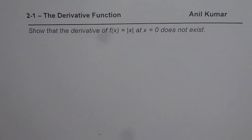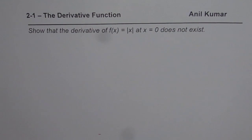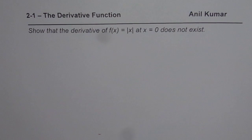I am Anil Kumar and here is a very important question from a test point of view. Show that the derivative of f of x equals absolute x at x equals to 0 does not exist.